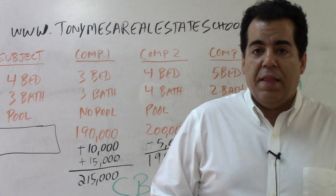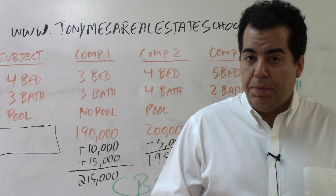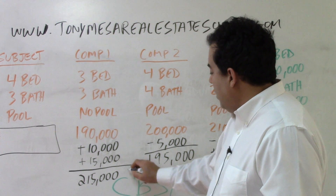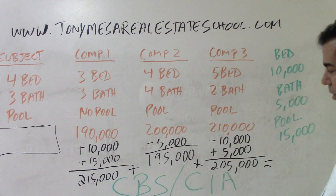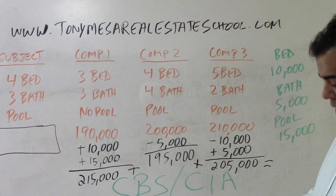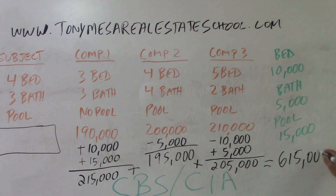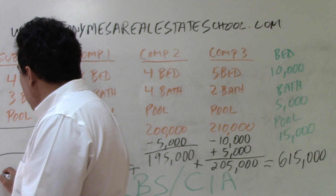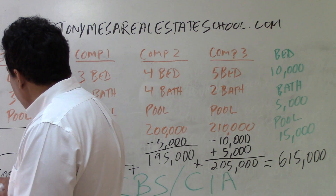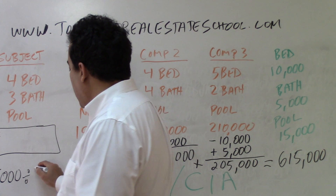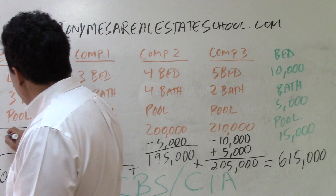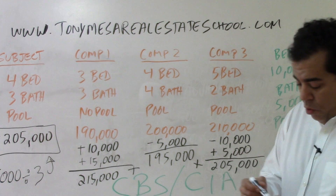On the state exam, if no weights are given for the comparables, you add together the three adjusted sales prices: $215,000 plus $195,000 plus $205,000 equals $615,000. Since you have three properties, you divide by three, and $615,000 divided by three gives you an estimate of value of $205,000 for the subject property.